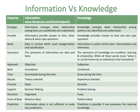Information provides answers to who, what, where and when type questions, while knowledge provides answers to how and why type questions. Information is data in context which needs categorization and classification, while knowledge is information in action which needs interpretation and inferences.